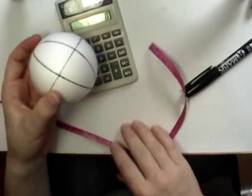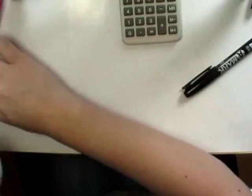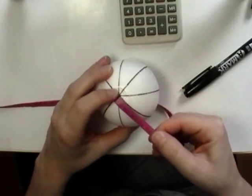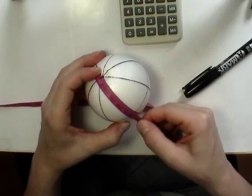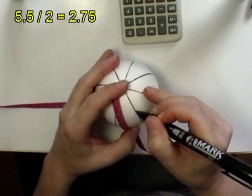Next, measure from your pole down to the equator and I got 5.5 centimeters. Then divide that in half and on every other line mark that halfway point.